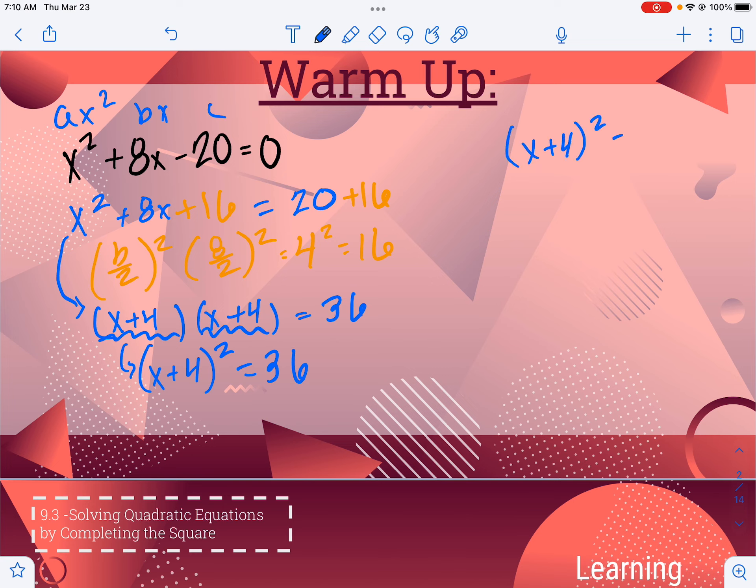Now we're going to square root both sides. Don't forget your plus or minus. And then we can subtract 4. 6 minus 4 would give me 2. Negative 6 minus 4 would give me negative 10. Those would be my two solutions.